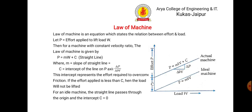Now the law of machine. It is an equation that states the relation between effort P and load W. If P is the effort applied, then for maintaining a constant ratio, the law of machine is P = MW + C, giving a straight line. M is the slope of the straight line, which is ΔP/ΔW, and C is the intercept of the line on the P-axis. This intercept represents the effort required to overcome friction. If the effort applied is less than C, then the load W will not be lifted.